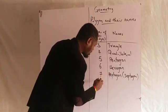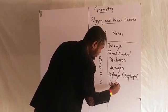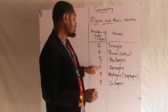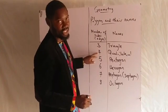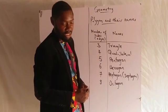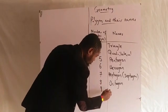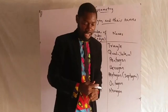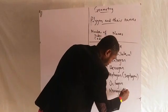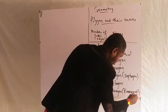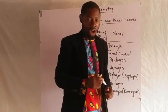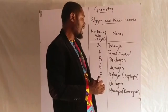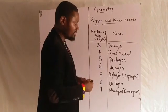The eight-sided shape is called the octagon. Then the nine-sided shape is called the nonagon. Some people also call it enneagon — so if you call it enneagon or nonagon, you will still be correct. The ten-sided shape is called the decagon.